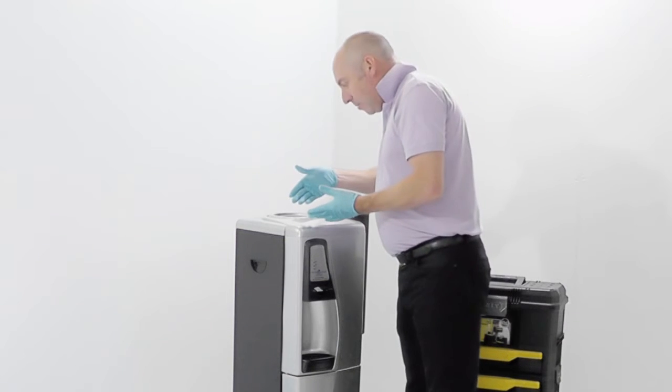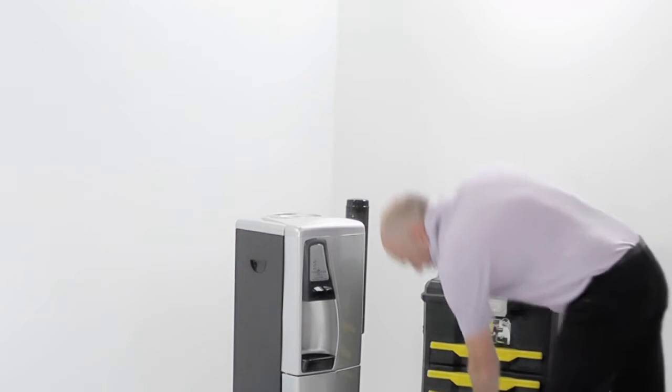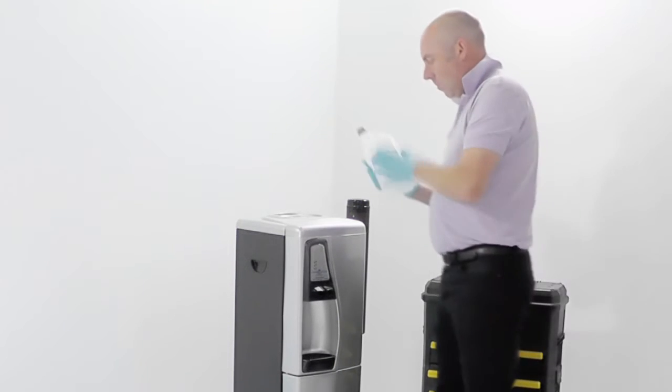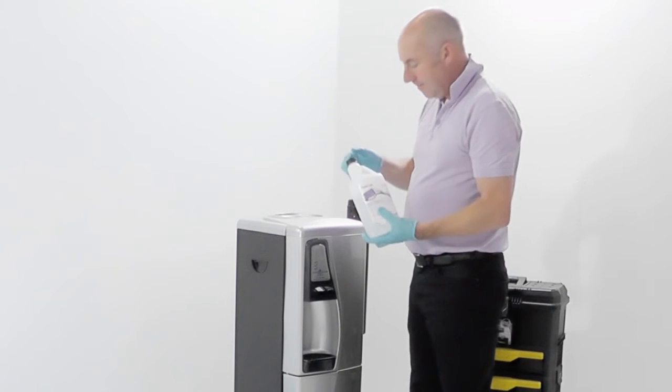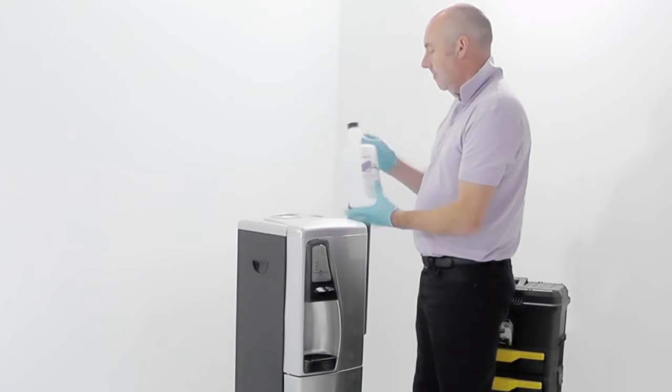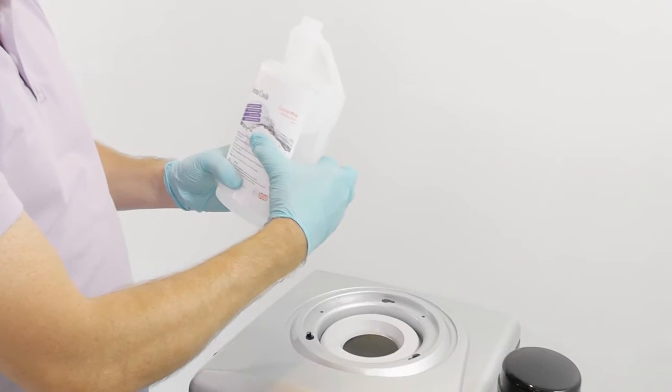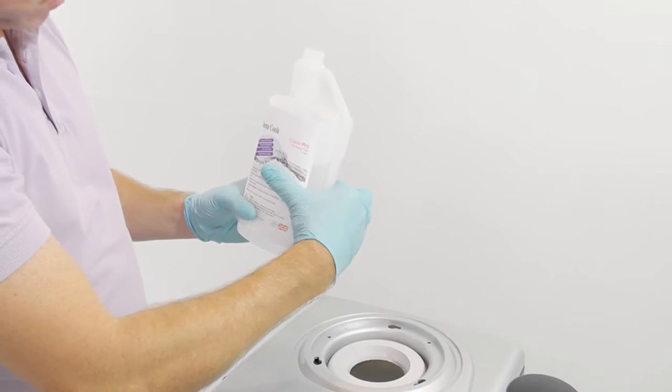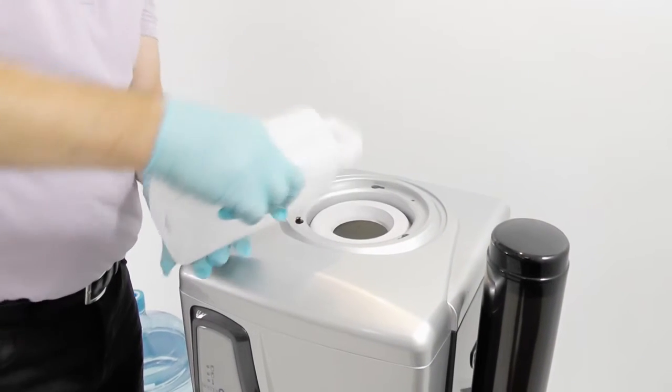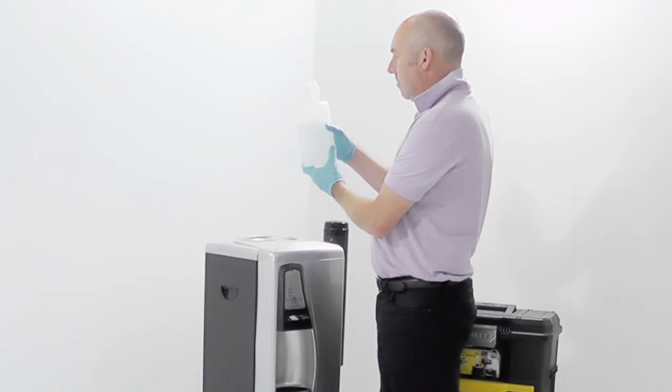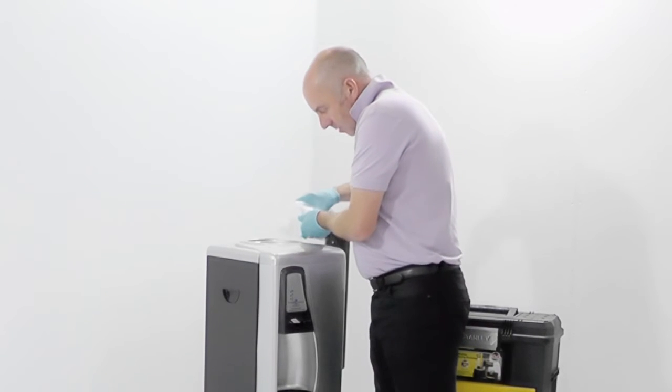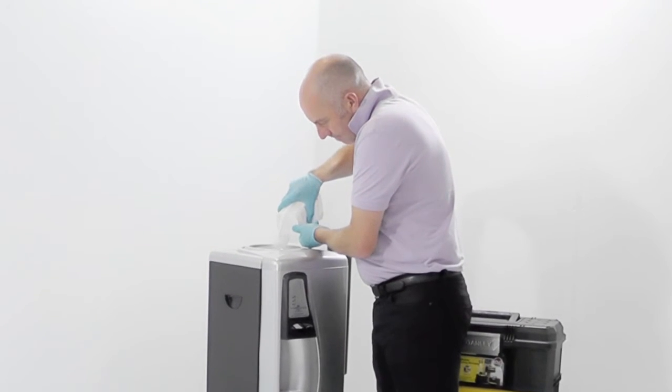We've got the reservoir open to us now and we're going to use hydrogen peroxide. It's safe, quick and easy. We're going to put 45ml of peroxide into this reservoir because it's quite a sizeable reservoir on this machine. And we've got the little dosing unit there so we know exactly how much we've put in.